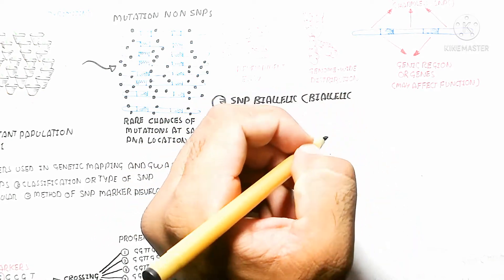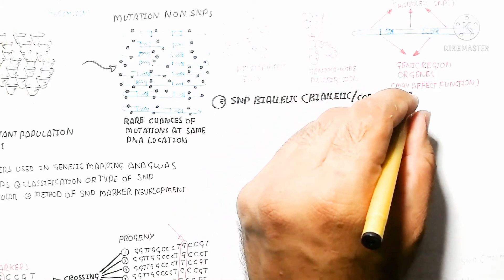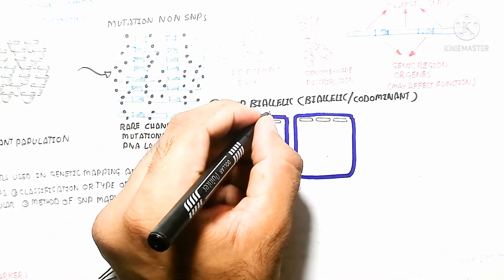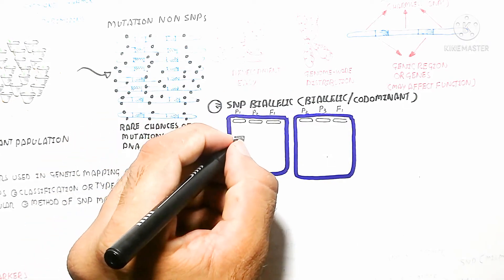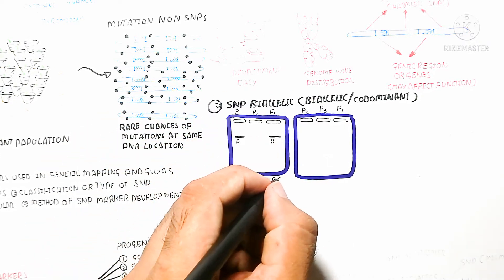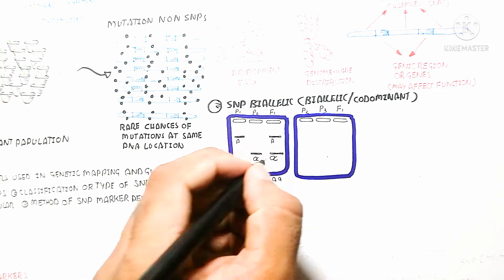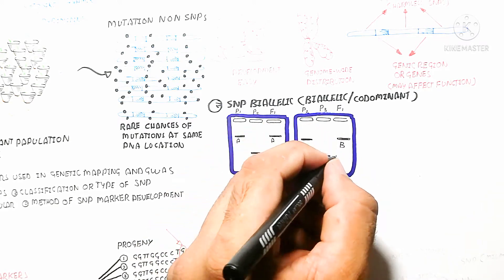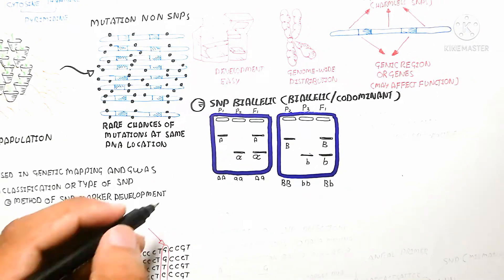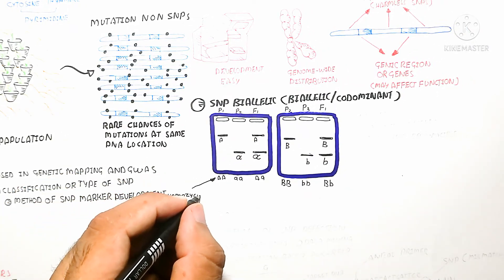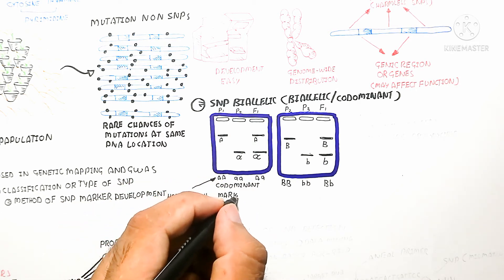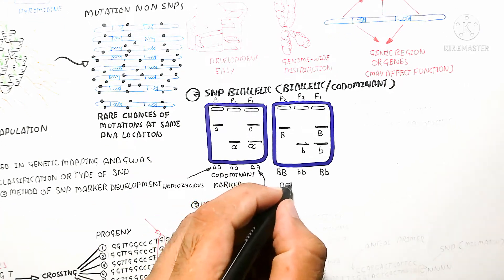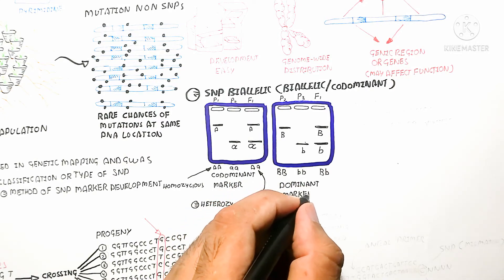SNPs are biallelic and co-dominant. SNP markers are sequence-specific and reproducible. In gel electrophoresis, you can see that Parent 1 and Parent 2 are both homozygous for adenine, while their filial generation shows heterozygous individuals. The segments can be matched, and homozygous and heterozygous states from parent to F1 generation are compared, making it easy to compare individuals to each other.